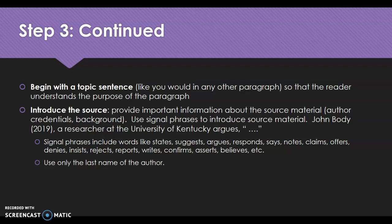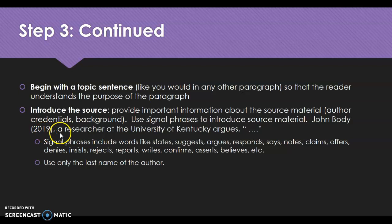After you've introduced the source, use a signal phrase to introduce the source material. All of your quotes in this paper need to begin this way. You'll include the author's first and last name — or just the last name — followed by the year the information was published, then their credentials. For example: 'John Bodie, a researcher at the University of Kentucky.' Signal phrases use verbs to introduce your material. The stronger the verb the better — are they suggesting, stating, arguing, asserting, confirming, rejecting? Those are more specific than just 'saying.'